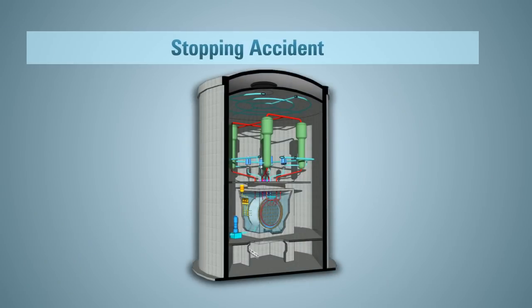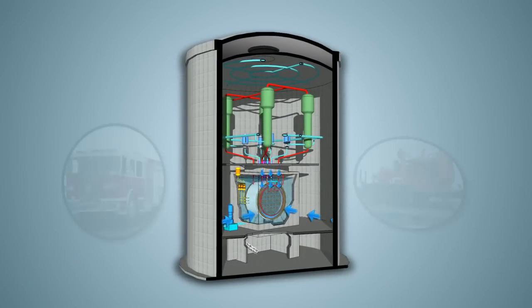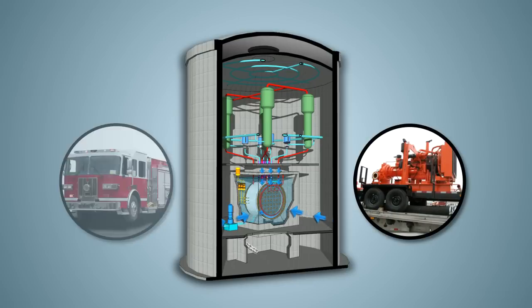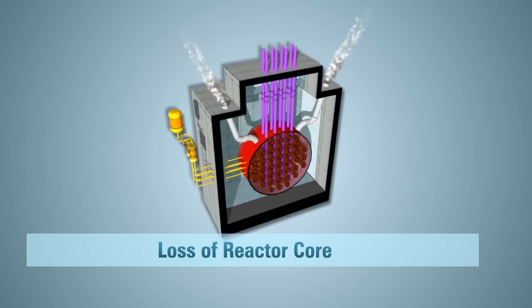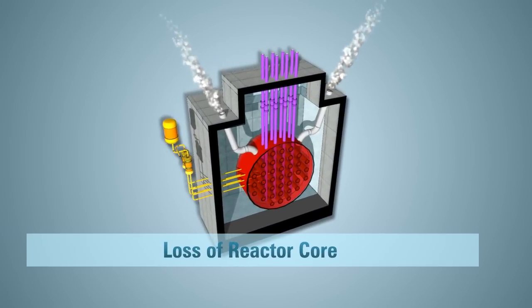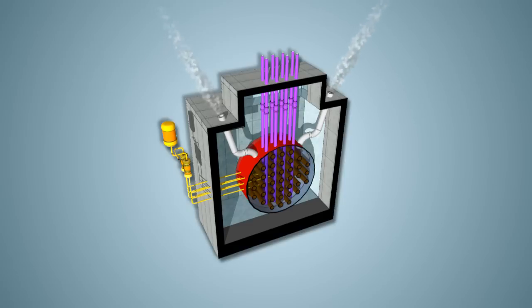Again, supplying water to the Calandria using emergency equipment such as fire trucks would stop the accident. Assuming the accident is not stopped, all remaining heavy water evaporates. The exposed fuel begins to melt and the reactor core starts to collapse inside the Calandria.